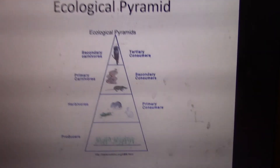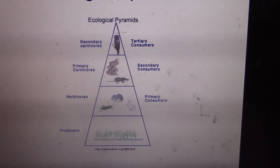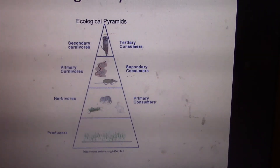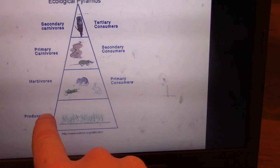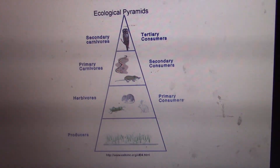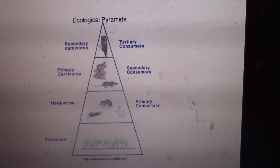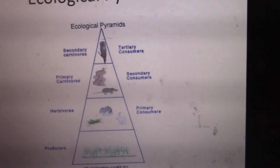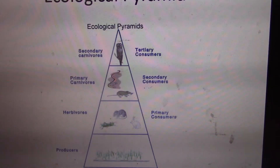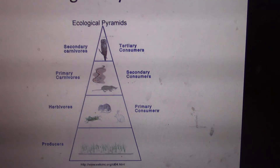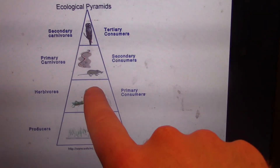Energy always moves up a food web — you lose 90% of the energy due to consumption and heat loss through basic thermodynamics. Only 10% of the energy from a lower trophic level gets transferred to the next level. That's why you can't have the same number of organisms at each level of consumption. Producers have the most solar energy, which transfers to primary consumers, then to predators, then to apex predators like tertiary and quaternary consumers at the top of food chains.